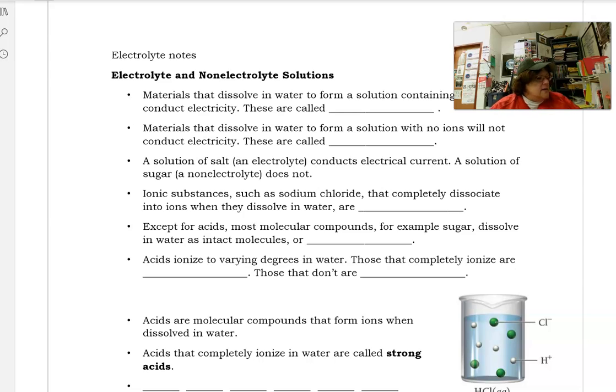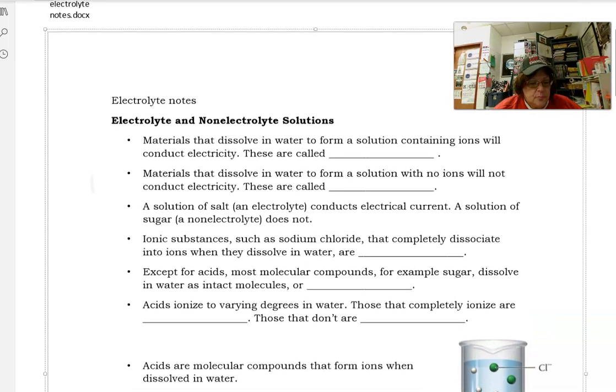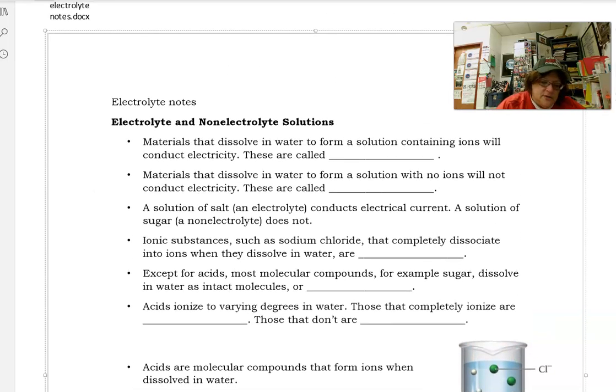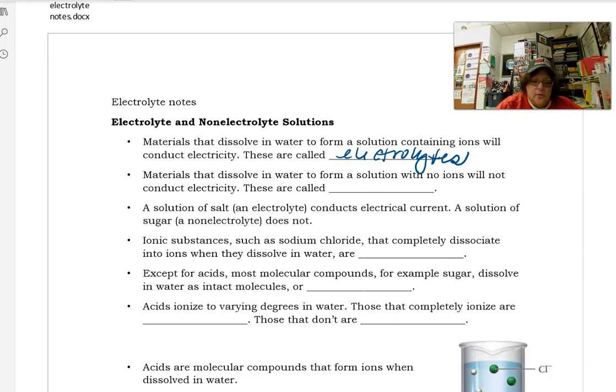An electrolyte is a compound that will conduct electricity when it is dissolved in water. If you dissolve something in water and it conducts electricity, that's what we're talking about. Materials that dissolve in water to form a solution are called electrolytes.